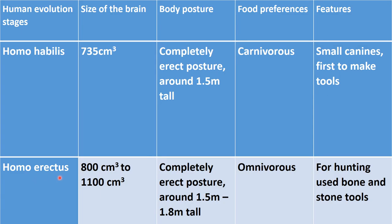The next stage is Homo erectus after Homo habilis. Brain size of Homo erectus is 800 cm³ to 1100 cm³. Their body posture is completely erect and their height is around 1.5 to 1.8 meters — so height is increasing. Food preference: omnivorous, meaning they used to eat fruits, plant products as well as meat. For hunting, they used bone and stone tools.